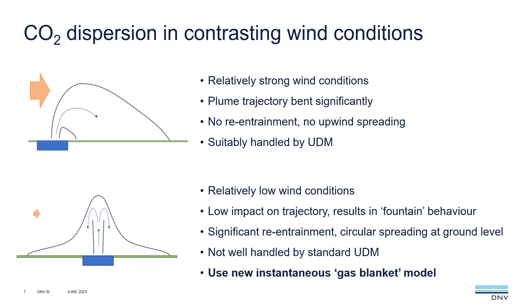Before we move on to the new dispersion model, it's worth taking a quick look at the specific conditions in which we need it. In higher wind conditions, we have the vertical plume from the crater bent significantly by the wind and we get touchdown at some point downwind. There's no re-entrainment, no upwind spreading, and standard UDM modelling has absolutely no problems handling this. In low wind conditions, the behaviour is somewhat different — the wind has very little impact on the trajectory and we get this fountain-like behaviour, which is what we saw in the COSHA case earlier. This is quite a complex flow with re-entrainment between the upward and downward flows. The CO2-rich mixture floods the crater, which means we don't get clean air entrainment there. We also expect circular spreading at ground level. This type of behaviour is not well handled by the UDM, but it is what the new gas blanket model goes some way to help us better represent.